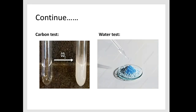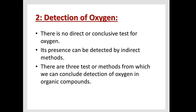For the carbon test and water test, we have two pictures. First one: clear liquid converting to a cloudy solution. Second one: white copper sulfate converting to blue copper sulfate. These conversions represent the confirmatory tests of carbon and hydrogen respectively. Next, we will move towards the detection of oxygen.